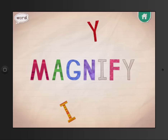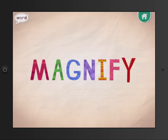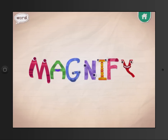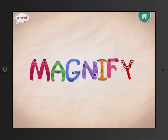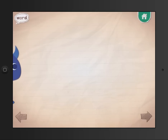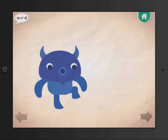If they need the auditory support of what that word is, it will give the definition when the conversation bubble with the word in it appears on top. Once you spell the word, there is again auditory and visual feedback, and then there is a short animation that explains the definition of the word.